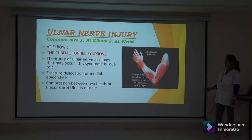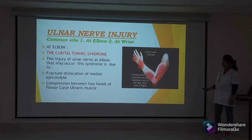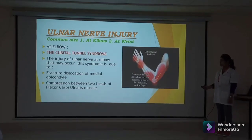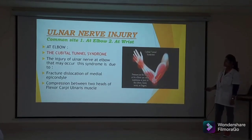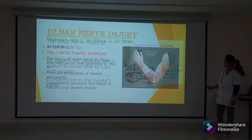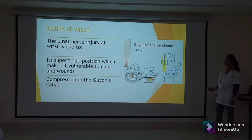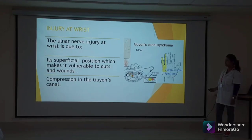Ulnar nerve injury commonly occurs at the elbow and at the wrist. At the elbow, cubital tunnel syndrome is an important clinical syndrome caused by injury of the ulnar nerve at the elbow, due to fracture or dislocation of the medial epicondyle, or compression between the two heads of flexor carpi ulnaris. At the wrist, the ulnar nerve is at risk due to its superficial position, making it vulnerable to cuts, wounds, and compression in Guyon's canal.